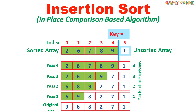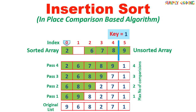In the next pass, 1 is copied in key. Then it is compared with 9, 8, 7, 6, 2, all of which are greater, so are shifted right. We reached the end of the sorted array, so the number 1 is copied to the beginning.